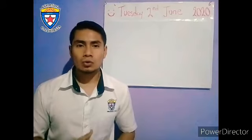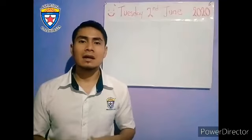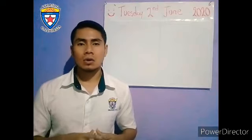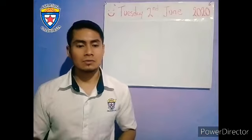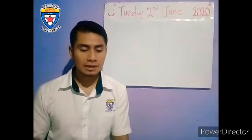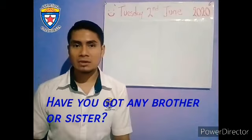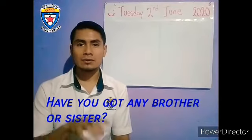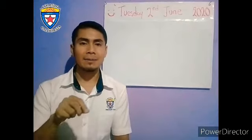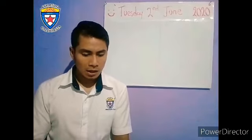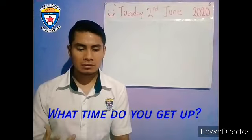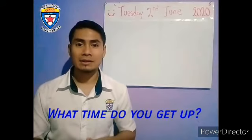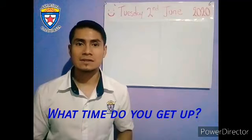En el ejercicio número 2, iban a formular preguntas con dichos vocabularios. Por ejemplo, los que nos mencionan ahí: have you got any brother or sister? Utilizamos el vocabulario de sister que ya estaba enlistado. What time do you get up? Get up, que es el vocabulario que está en la parte de everyday activities.